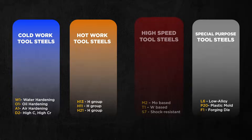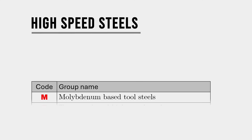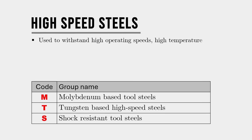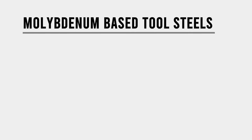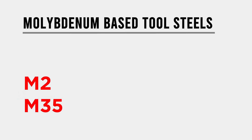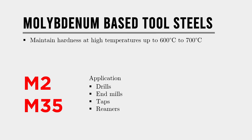High speed steels belong to the M, T, and S groups. These steels are used where tools must withstand high operating speeds, high temperatures, and heavy workloads, typically in cutting tools and machining operations requiring high performance. The M group, or molybdenum-based tool steel — popular grades M2 and M35 — are ideal for tools like drills, end mills, taps, and reamers. They maintain hardness at high temperatures up to 600 to 700°C and offer high wear resistance and toughness.